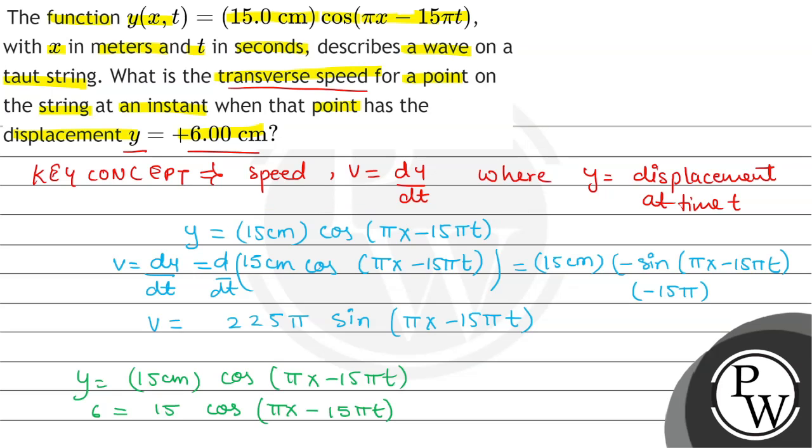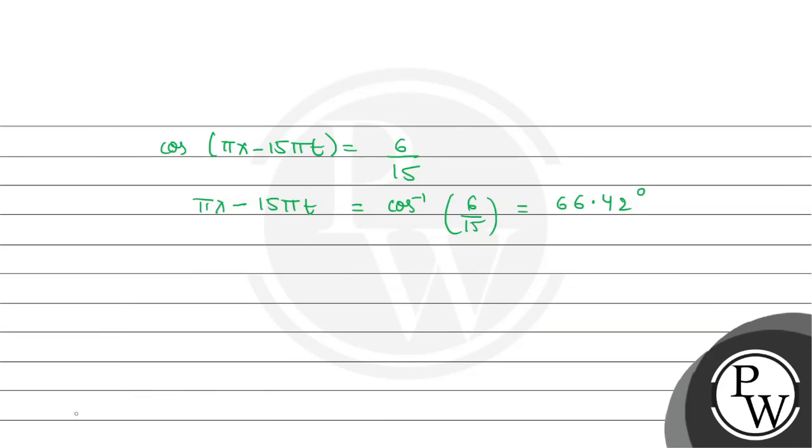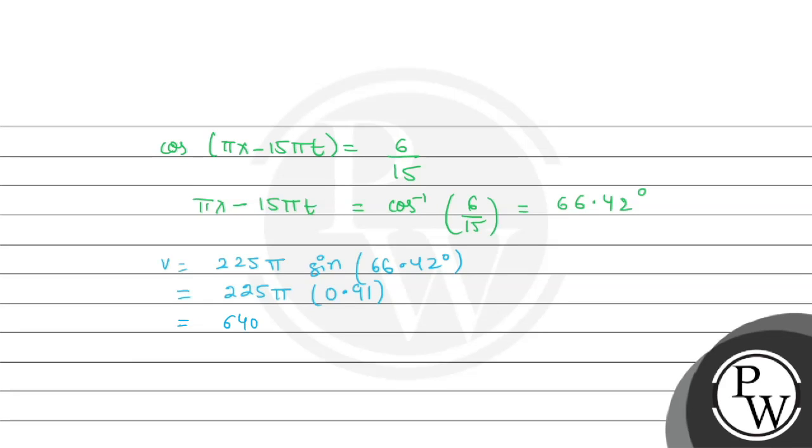Now what will we do? If we solve this, we get approximately 640 cm/s. So this is the required answer. This is the velocity of the transverse wave. I hope you understood the question well. Best of luck. Thank you.